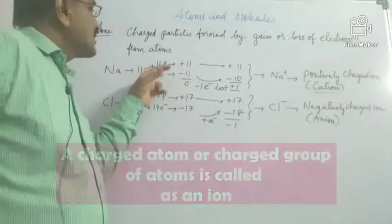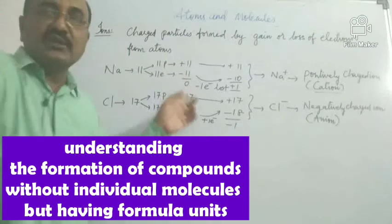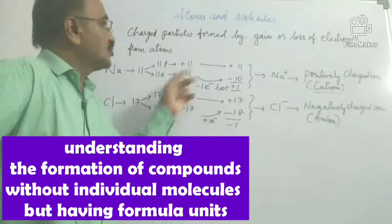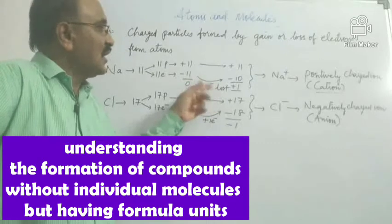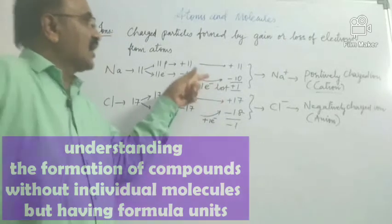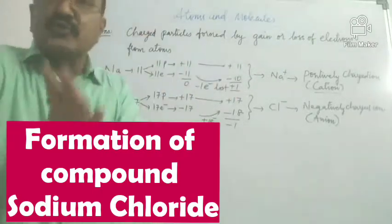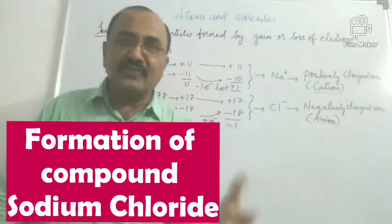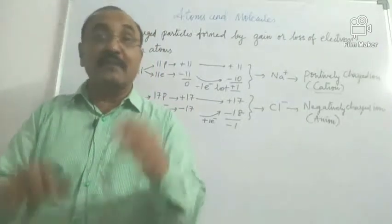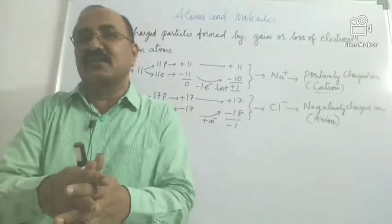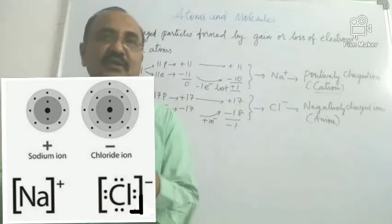Naturally, that atom of sodium should be neutral. When it loses one electron — represented here by a cross arrow — it's losing one electron. The 11 protons, with 11 positive charges, are maintained. Protons are not lost because they are tightly bound within the nucleus. It is very difficult to remove protons from the nucleus. Electrons, on the other hand, are on the outside. By giving some heat, electricity, or friction, you can make atoms lose electrons.